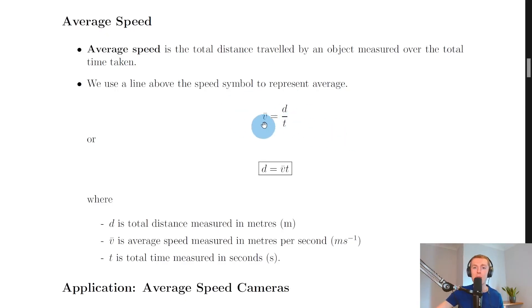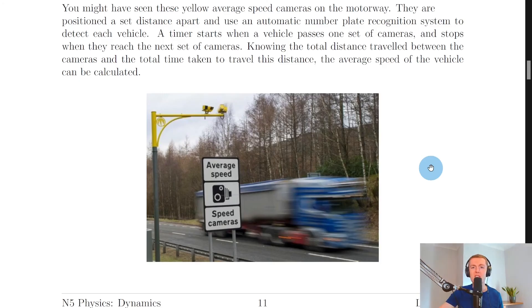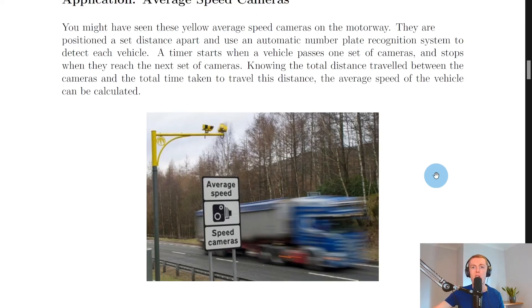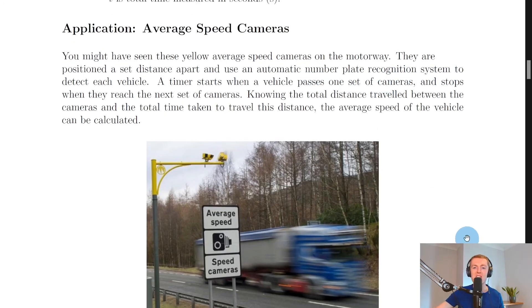Now obviously, this is not done manually by a person. It's done by a computer which is going to automatically calculate your average speed when you've passed between the two average speed cameras. And remember, the way that your vehicle is detected is using this automatic number plate recognition system by the cameras.